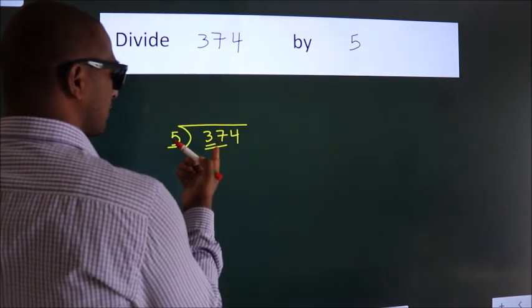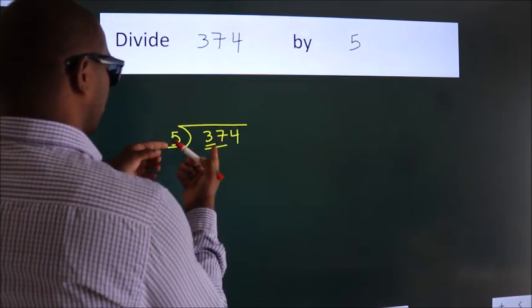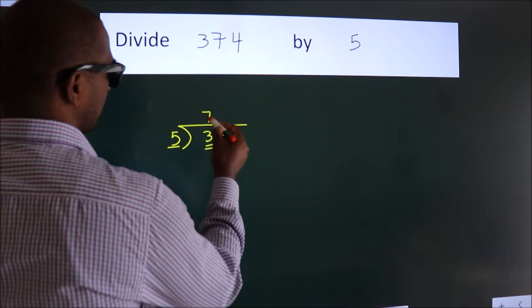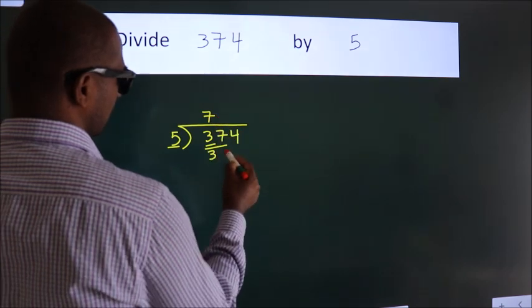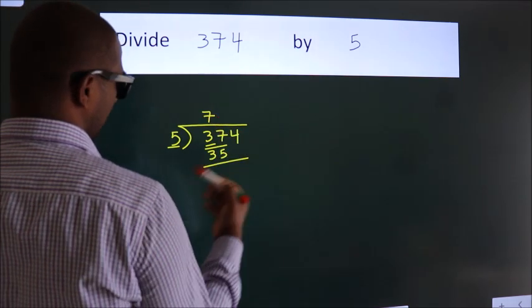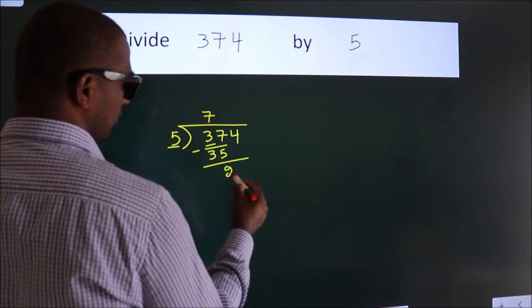A number close to 37 in the 5 table is 5 times 7 equals 35. Now we should subtract. We get 2.